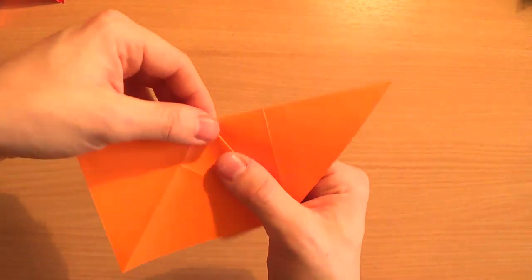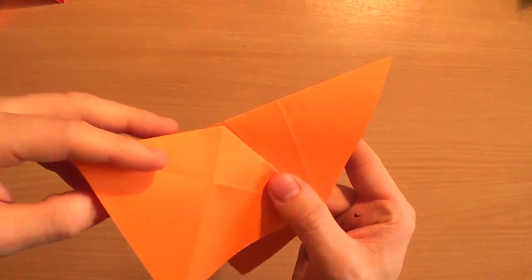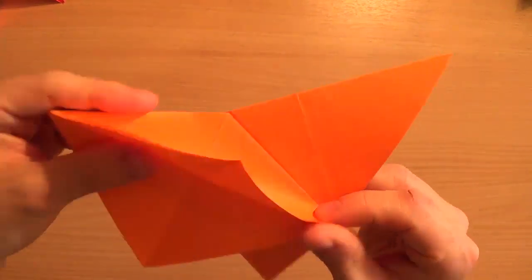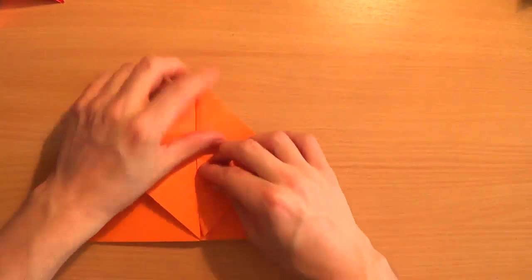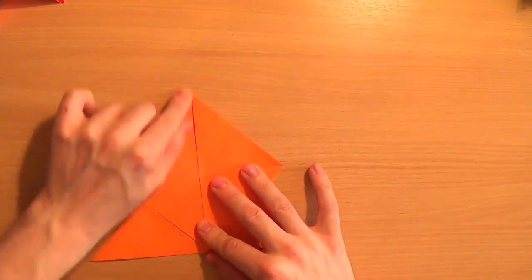And then the corresponding crease behind your flap gets turned into a mountain fold as well. And then we turn that over along a straight line. We should leave it flat like that.